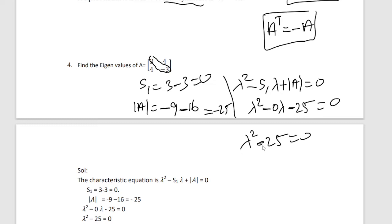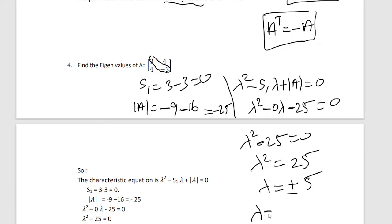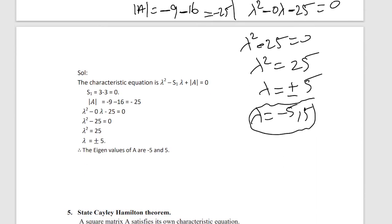Applying the characteristic equation: lambda squared = 25, so lambda = ±5. Our final lambda eigenvalues are minus 5 and 5. Apply and solve the characteristic equation to find the eigenvalues.